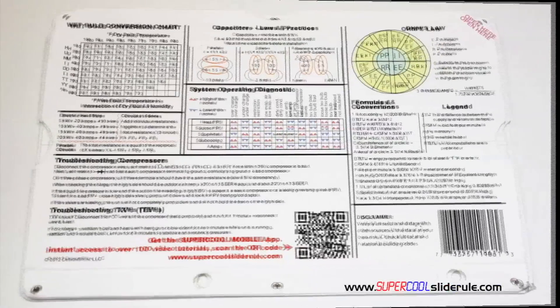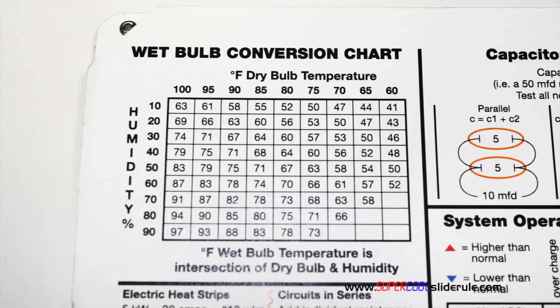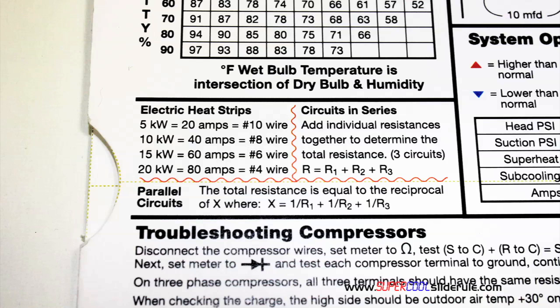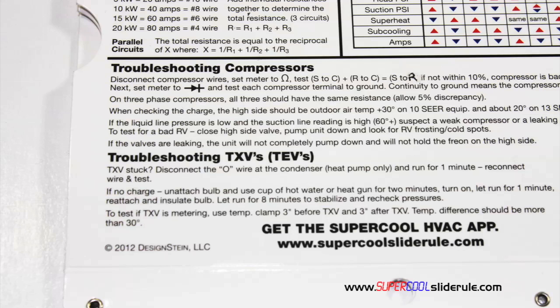The back cover contains required formulas. It has capacitor rules and practices, a wet bulb conversion chart, how to perform computations on series or parallel circuits, an electric heat strip guide, a complete system troubleshooting diagnostic chart, and how to troubleshoot compressors and TXV.